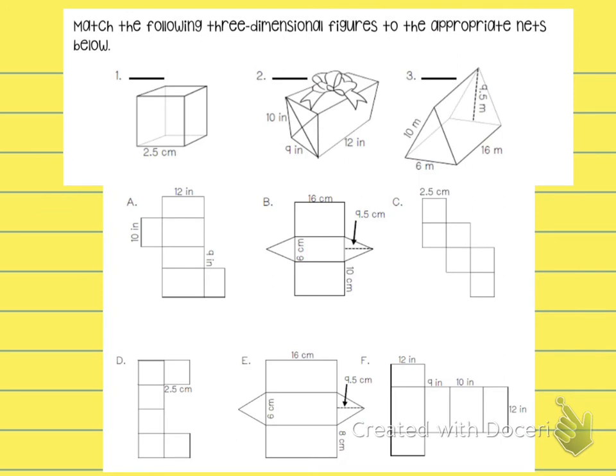So, you're going to do two, three, and four on your own, and then you're going to do the matching. So, it says, match the following three-dimensional figures to the appropriate nets. So, if you see, there are just three of these, right? And then there's six nets. So, obviously, you're not going to use three of them.